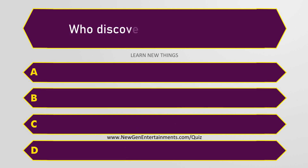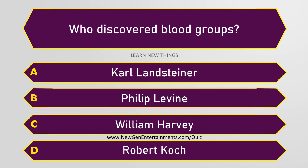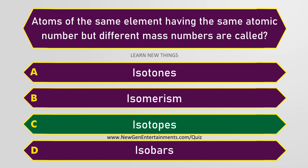Who discovered blood groups? Karl Landsteiner. Atoms of the same element having the same atomic number but different mass numbers are called isotopes.